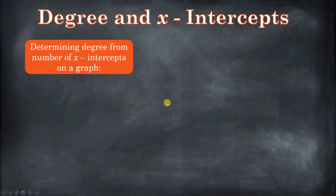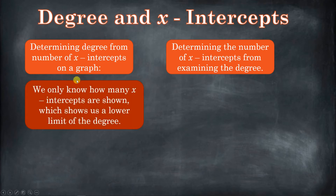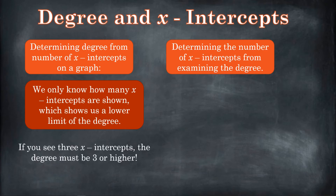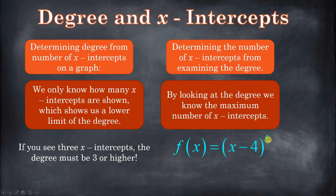If you're determining the degree from the number of x-intercepts on a graph, you can find what its minimum degree is going to be. So when we had four x-intercepts, we knew the degree was at least four, because if it were degree three, the most intercepts it could have would be three. So if you see three x-intercepts, the degree is three or higher. On the flip side, if you're looking at a function — for example, x minus four to the fifth — that has a degree of five, so the most x-intercepts it will have is five.